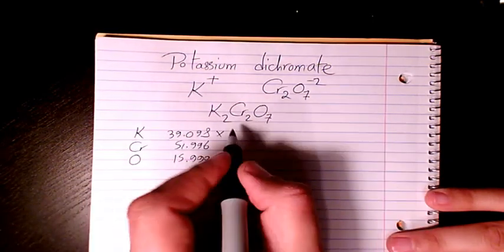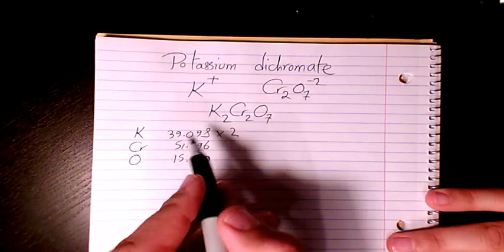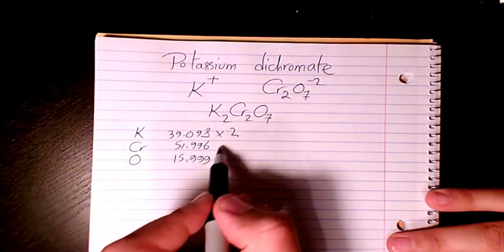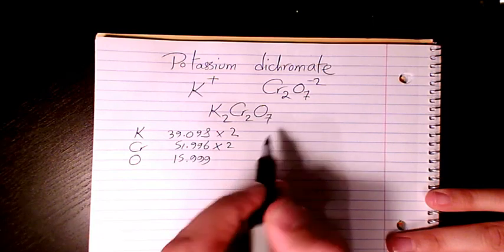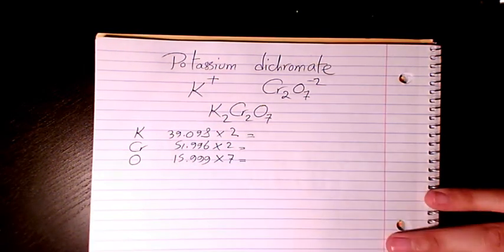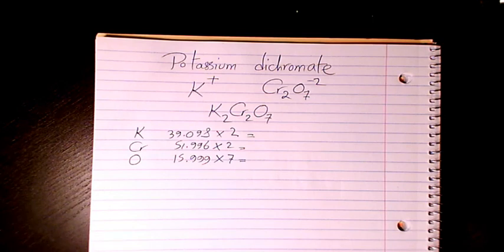How many potassium we have? We have just two. How many chromium we have? We have two. And how many oxygen? We have seven.